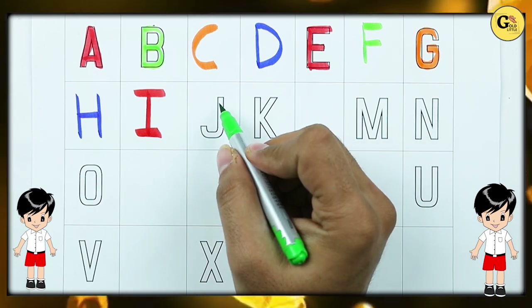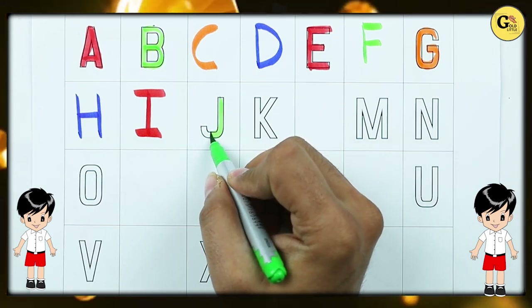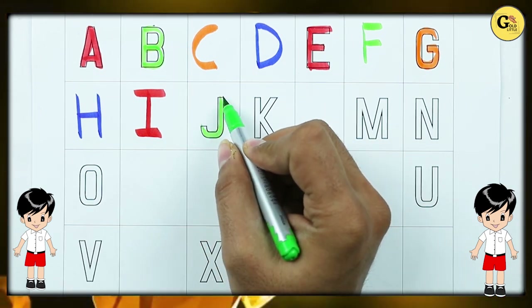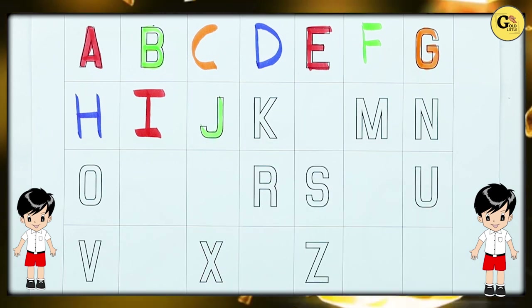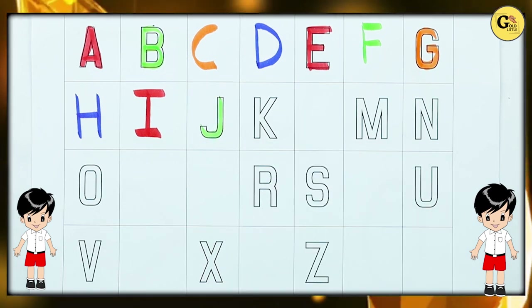And J. J for jug. J with green color. J for jug.